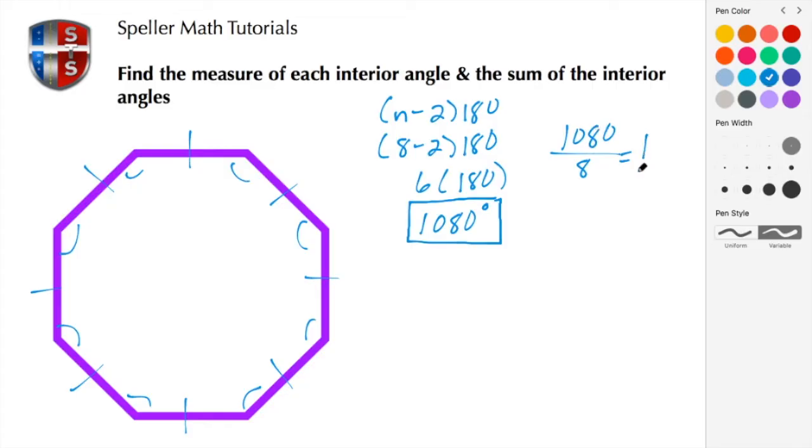8 goes into 10 one time leaving 2 left over so now it's 8 into 28. 8 goes into 28 three times so 8 times 3 is 24 so here we have 4 left over so now that's 40 and 8 goes into 40 five times.